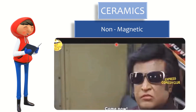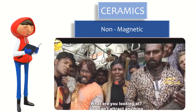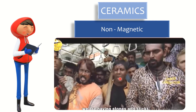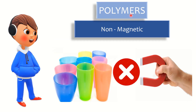Ceramics are non-magnetic. But some ceramics like oxides — Fe3O4 and hematite — exhibit magnetic properties. In general though, ceramics are non-magnetic. As shown in this video, stone comes under the ceramic category, so stone is non-magnetic. That is why they used a stone to fight the robot — to understand that ceramics are non-magnetic. Whereas polymers are also non-magnetic — when we put any magnet towards a polymer or any plastic, it will not attract.